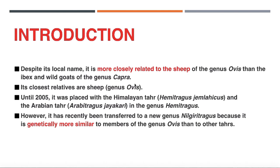Ibex is a word used for wild goats, but it is actually a local name equivalent to wild goat. However, it is seen that Nilgiri Tahr is more closely related to the sheep species of the genus Ovis than to the Ibex and wild goats of the genus Capra.